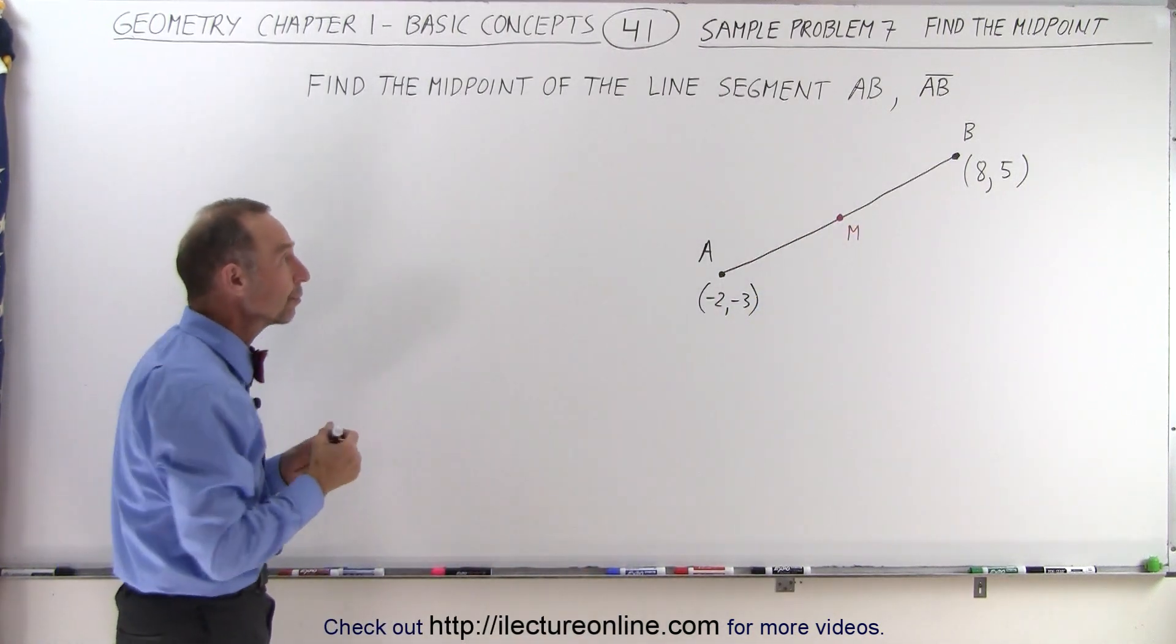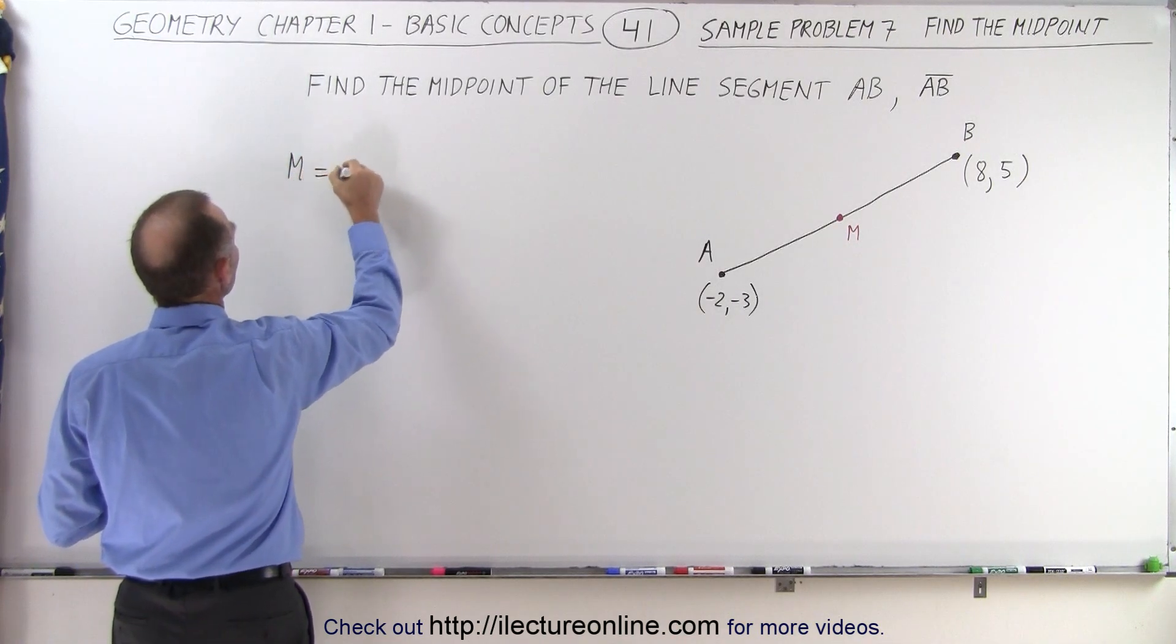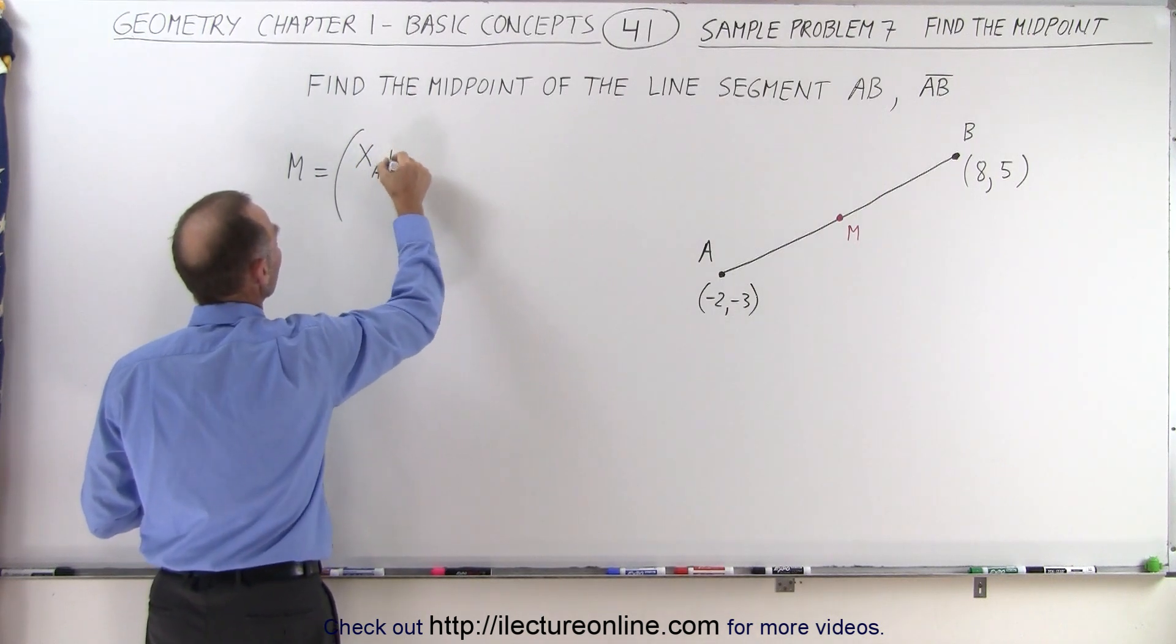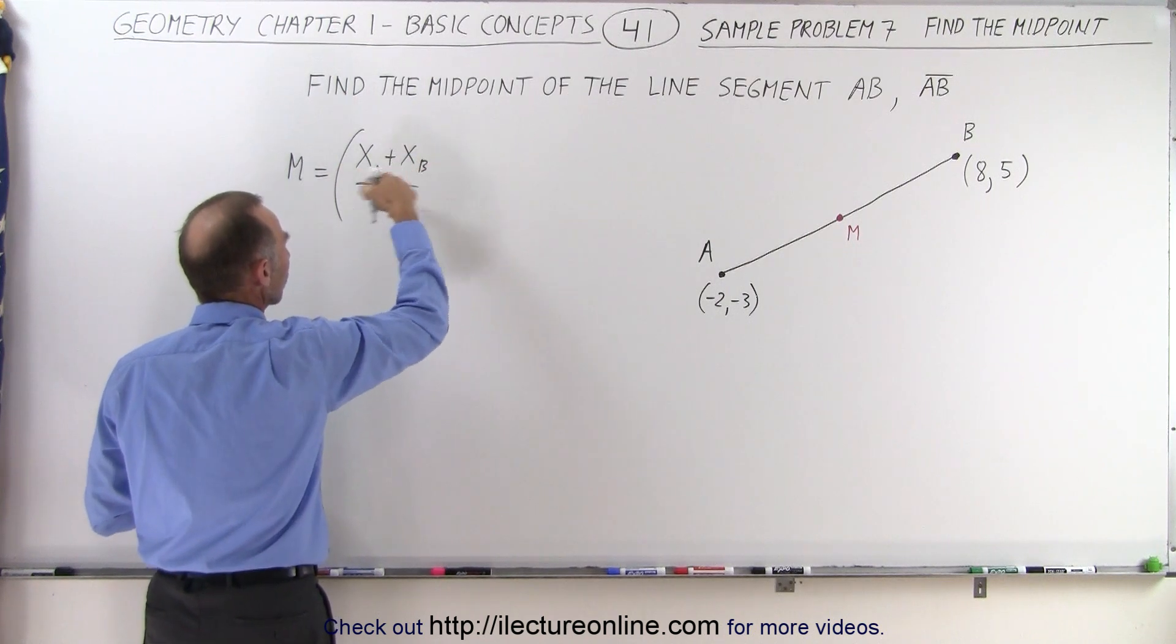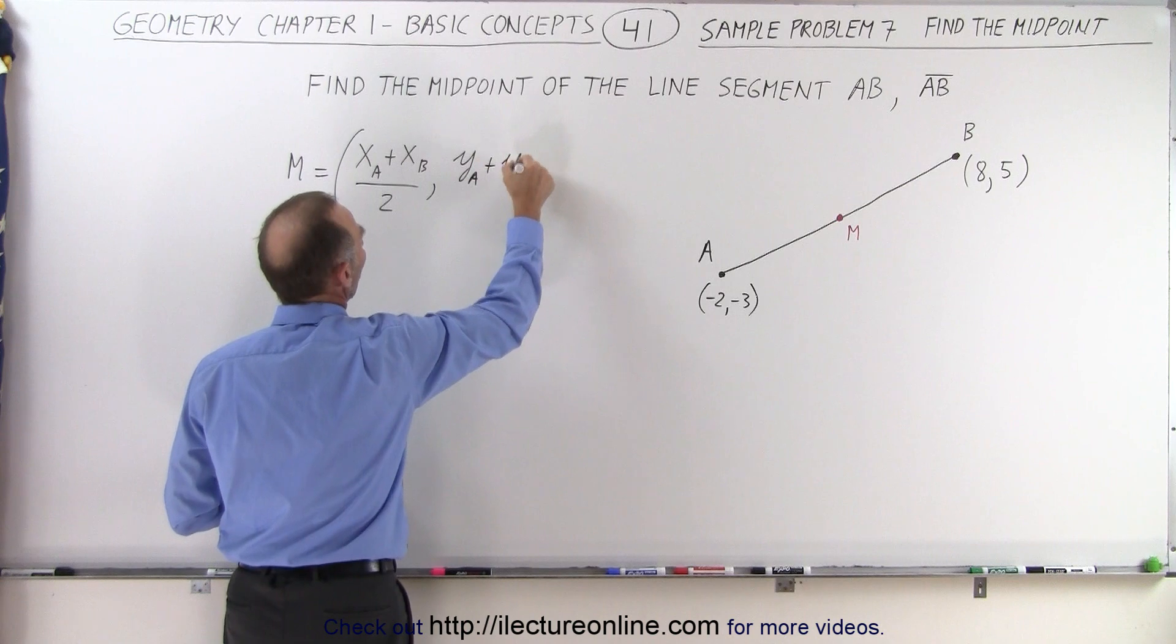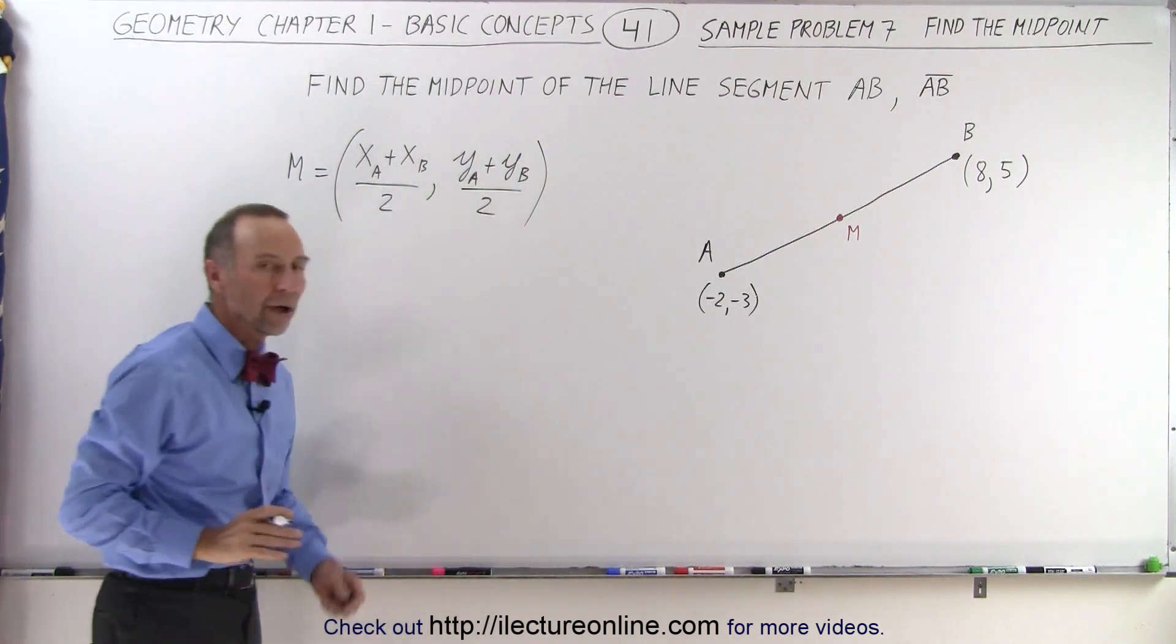How do we do that? We use the following midpoint equation. The midpoint is equal to the x, y coordinates as defined by x sub A plus x sub B divided by 2, which gives us the x coordinate of the midpoint, and y sub A plus y sub B divided by 2, which gives us the y coordinate of the midpoint.